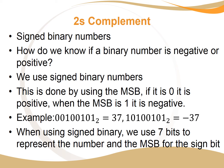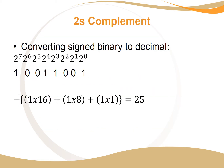In signed binary, we use seven bits to represent the number and the most significant bit is the sign bit. To convert signed binary to decimal, you write the power of two above each bit as you normally would. Remember that the most significant bit is the sign bit — it just indicates a minus sign at the front. Working through the example: two-to-the-four is 16, two-to-the-three is 8, and so on. The result is minus 25.